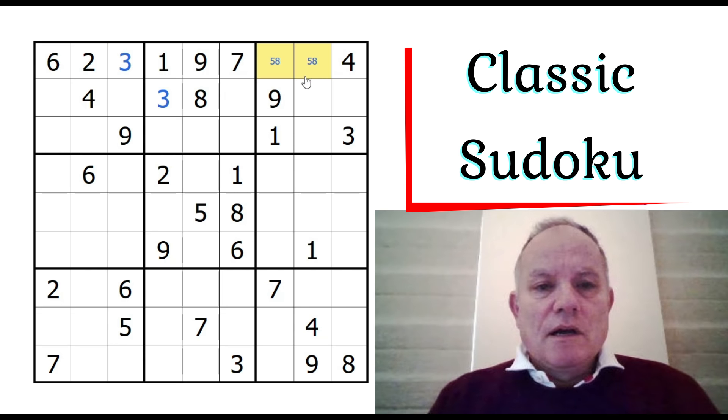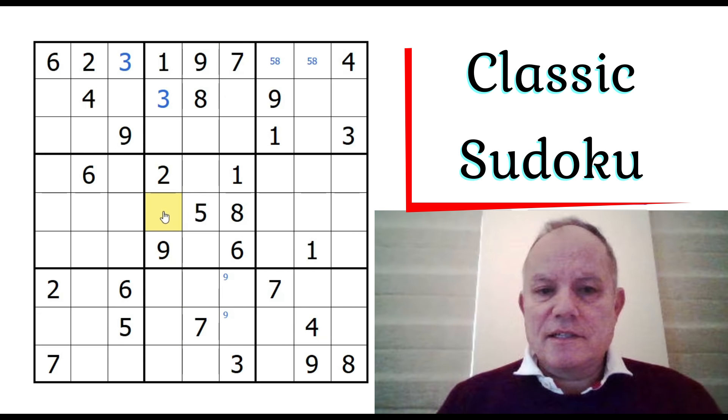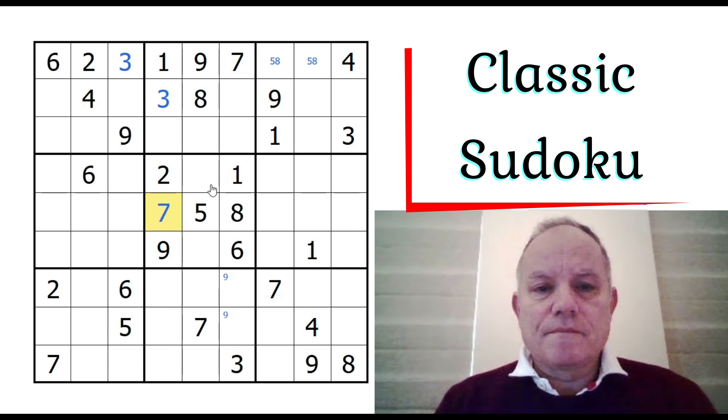Let's put in some Snyder notation. This seven and this seven see this box, so seven has to be in that cell, and we get a three four pair. This becomes a naked single nine - eight, three, five, four, seven in its column, two, six in its row.